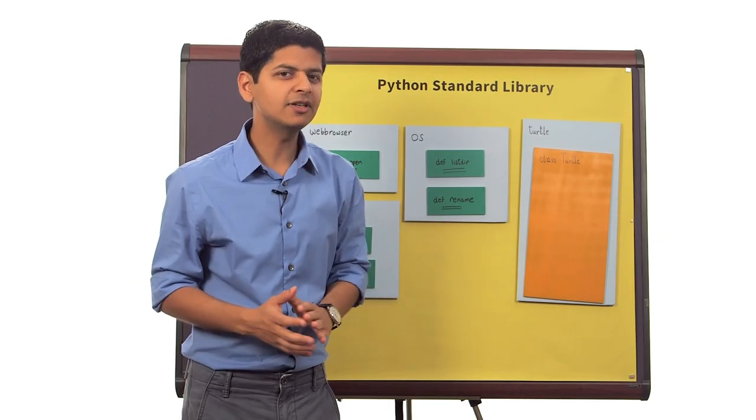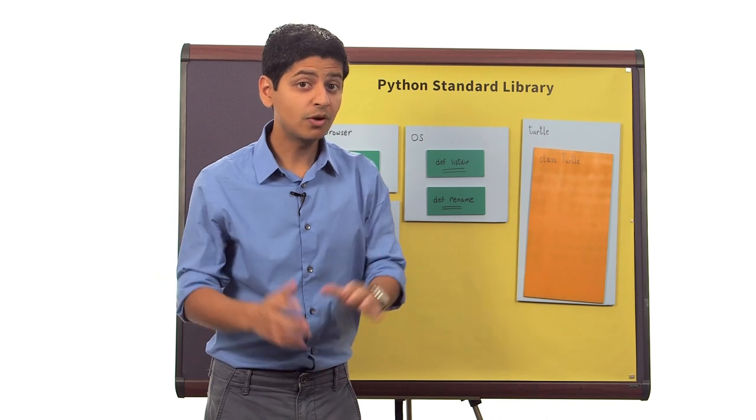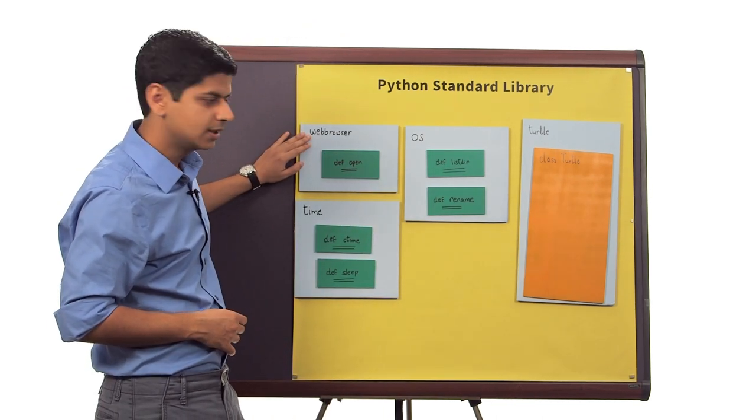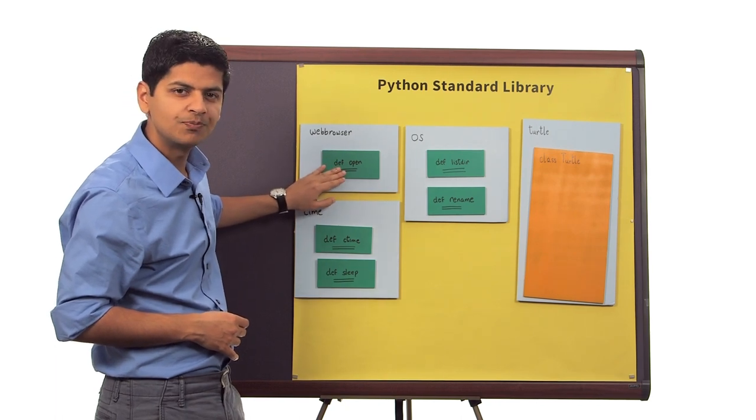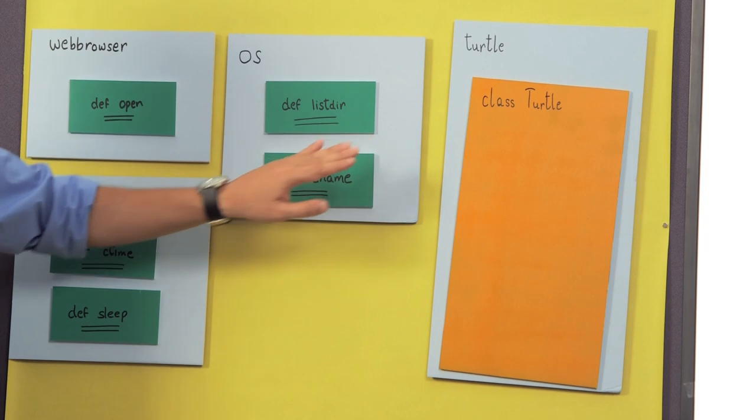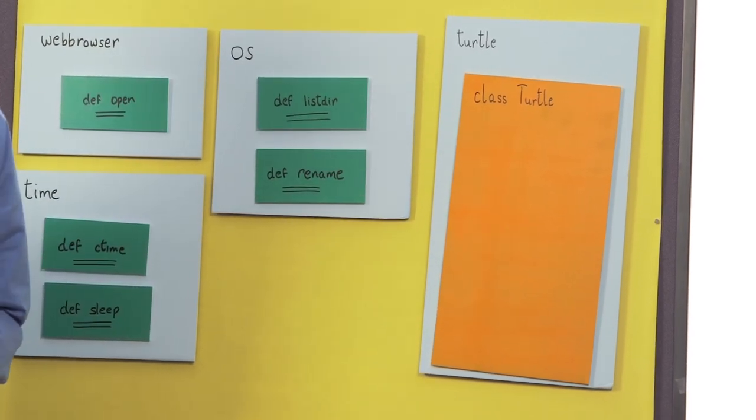Now this is a little different than what we've seen thus far. What we've done thus far is some sort of a file, like a web browser, dot some sort of a function, like open. But we haven't seen this thing called a class, which begs the question: what is a class?